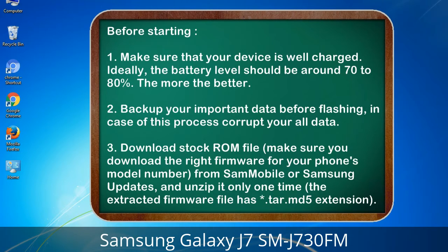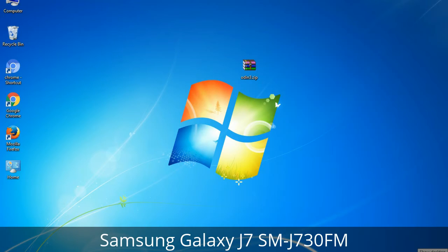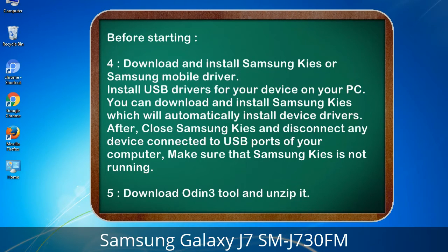3. Download the stock ROM file. Make sure you download the right firmware for your phone's model number from Sammobile or Samsung Updates, and unzip it only one time. The extracted firmware file has a *.tar.md5 extension. 4. Download and install Samsung KIS or Samsung mobile driver to install USB drivers for your device on your PC. Samsung KIS will automatically install device drivers. After installing, close Samsung KIS, disconnect any device connected to USB ports, and make sure Samsung KIS is not running. 5. Download the Odin3 tool and unzip it.